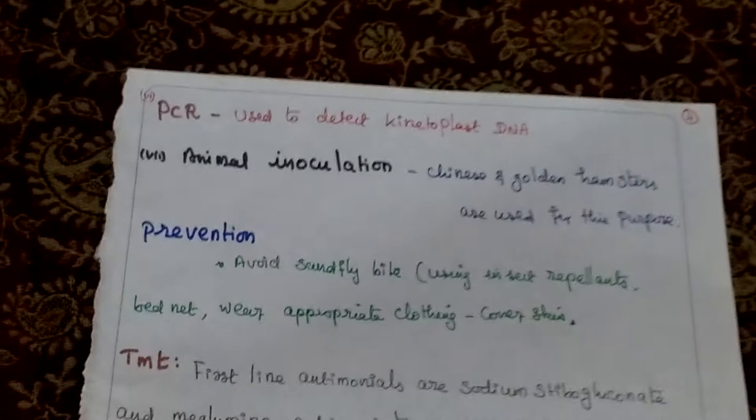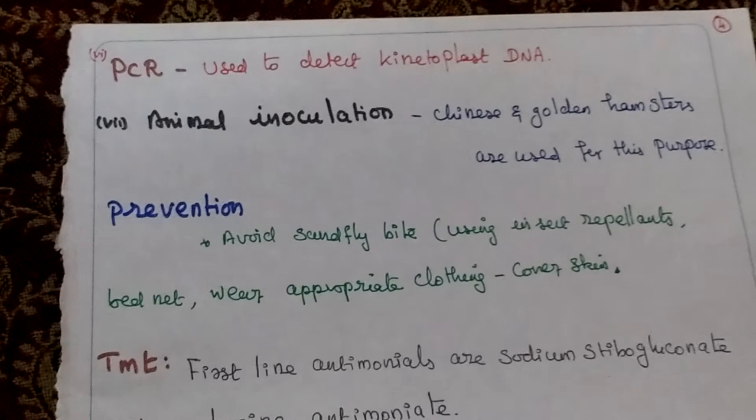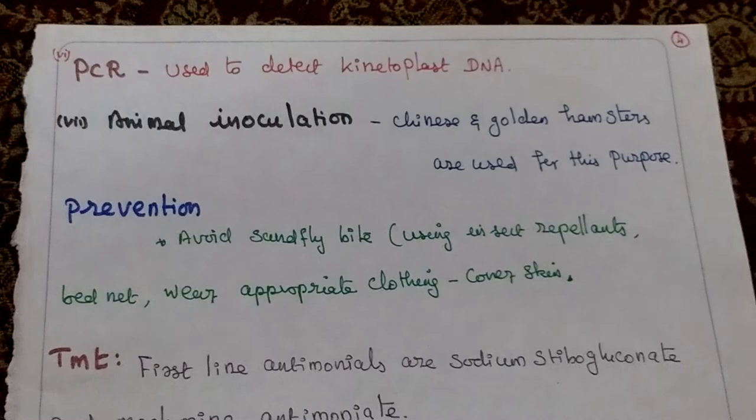PCR (polymerase chain reaction) is also used to detect kinetoplast DNA. Animal inoculation using the Chinese golden hamster is also used for this purpose.